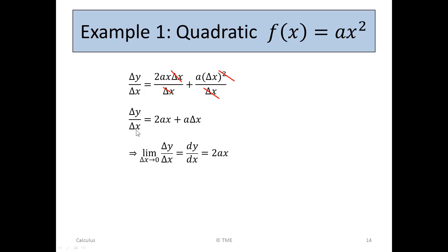When delta x becomes very small, delta y over delta x tends to the limit dy/dx. And if delta x is tiny or virtually zero, a times zero is still zero. So dy/dx is just 2ax.